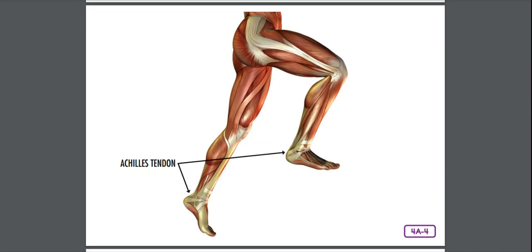Narrow, rope-like tissues called tendons attach bones to muscle. You can see the tendons under your skin if you flex your arm back and forth. Try it — bend your elbow as if you want to show off your muscles, and feel the tendon just under the skin on the inside of your elbow.